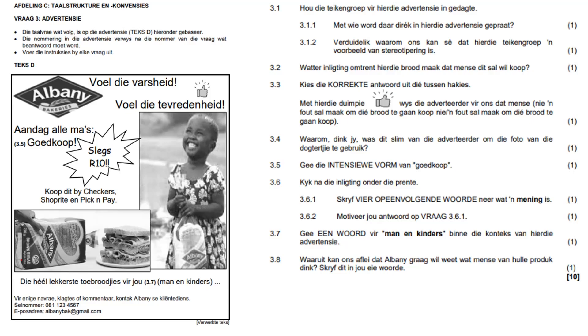Hi guys, today we're going to take a look at revision on an advertency. First and foremost, they want you to read the advert. All the questions in this question are based on this ad, so you must answer all the questions in context. The numbers here on the advert indicate the numbers here — for example, 3.5 refers to 3.5 over here. Just answer all the questions; that's what your instructions say.